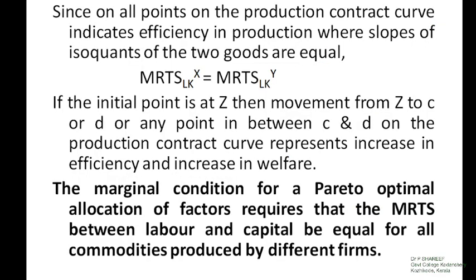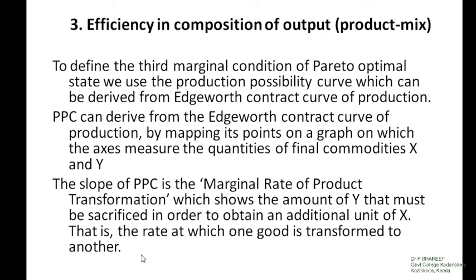Thus we can conclude the second marginal condition: for a Pareto-optimal allocation of factors, the marginal rate of technical substitution between labor and capital must be equal for all commodities produced by different firms. When two commodities X and Y are produced using two factors, labor and capital, the condition states that the marginal rate of technical substitution between labor and capital for producing X will be equal to the marginal rate of technical substitution between labor and capital for producing Y.